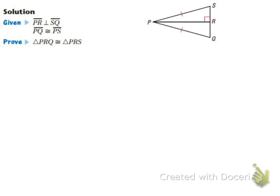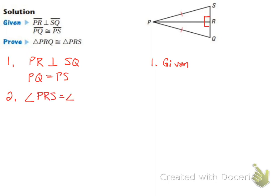For the first proof, we're given that PR is perpendicular to SQ, and PQ and PS are equal to each other, and we want to prove the triangles are congruent. The first step is the given statement: PR is perpendicular to SQ, and PQ equals PS. Since PR is perpendicular to SQ, the two angles formed — angle PRS and angle PRQ — are both right angles and are equal to each other, by the definition of perpendicular.